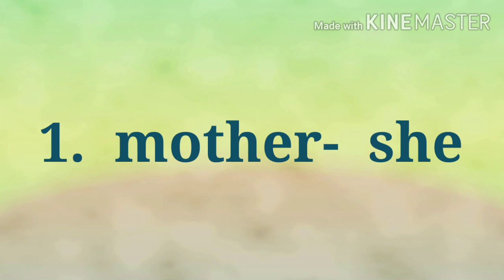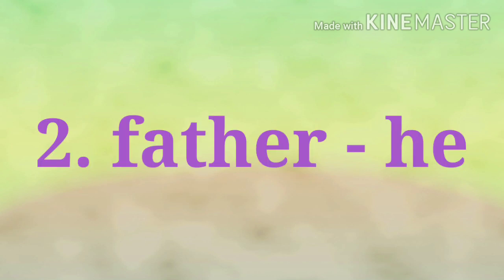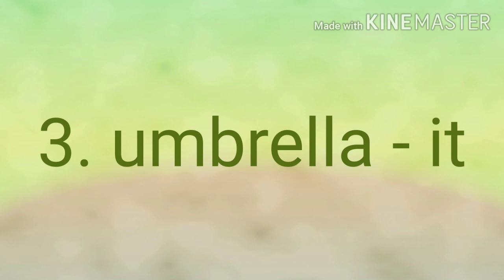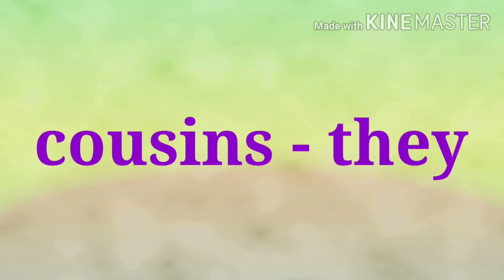Number one — 'mother' is a girl, so we're going to use the personal pronoun 'she.' Father is a man, so we're going to use 'he.' Umbrella is a thing, so we're going to use 'it.' Number four, 'cousins' — it is more than two persons, so we're going to use 'they.' How about number five?